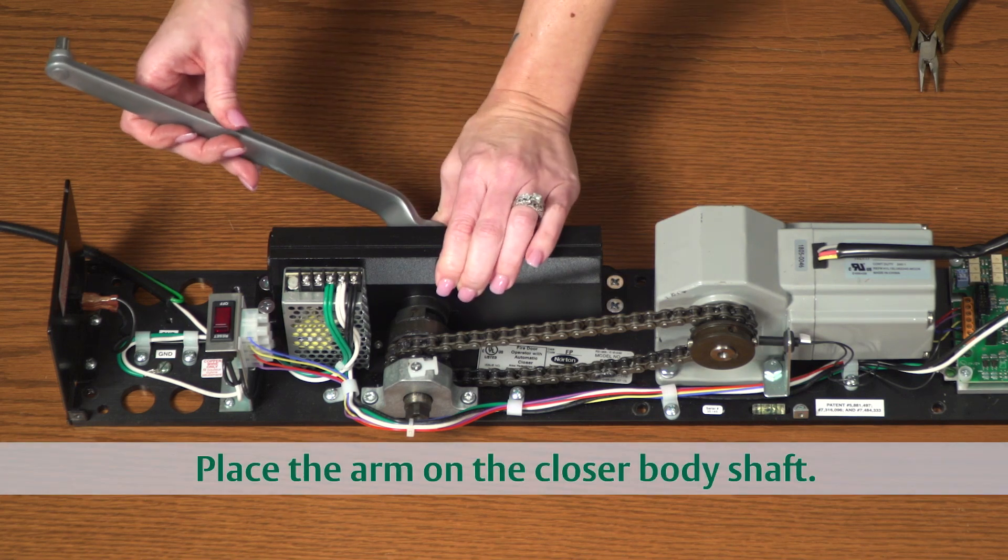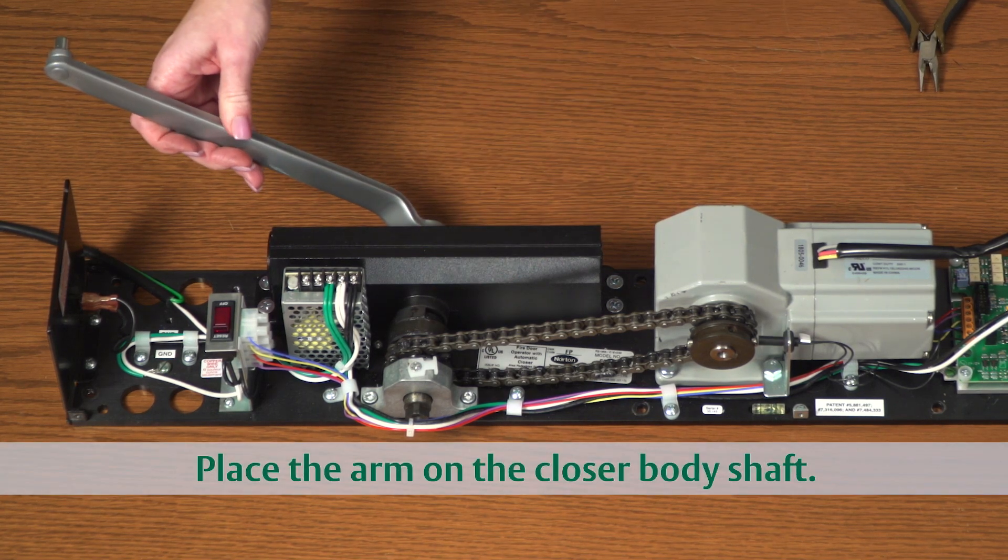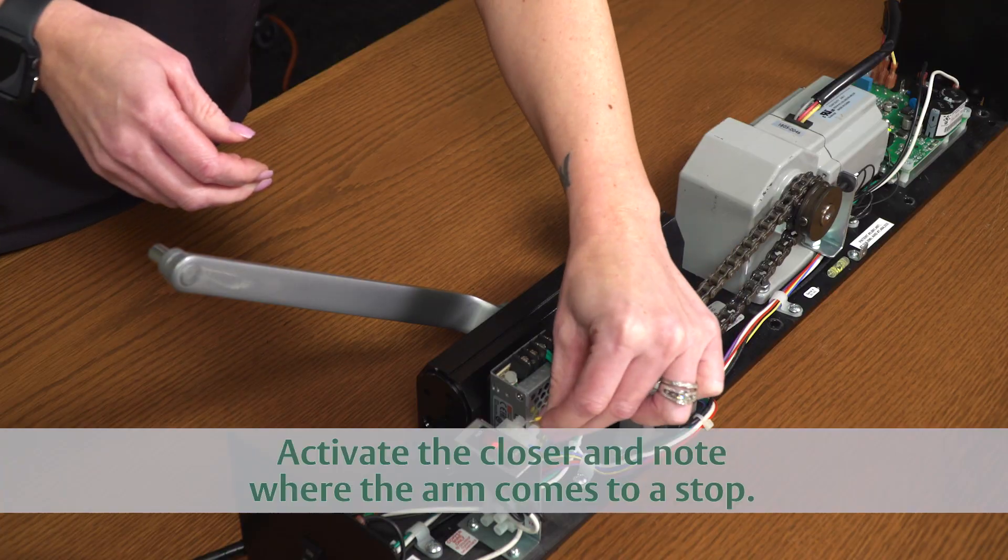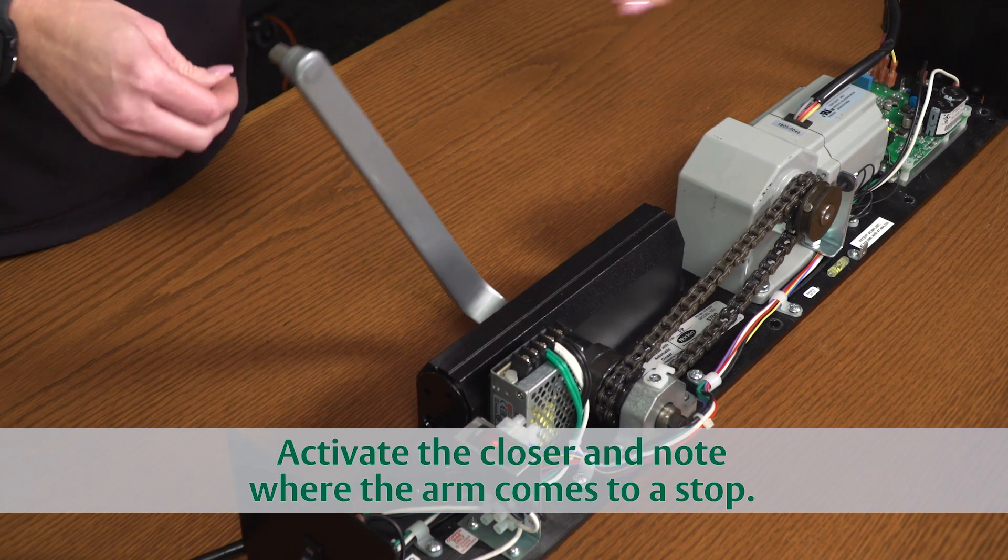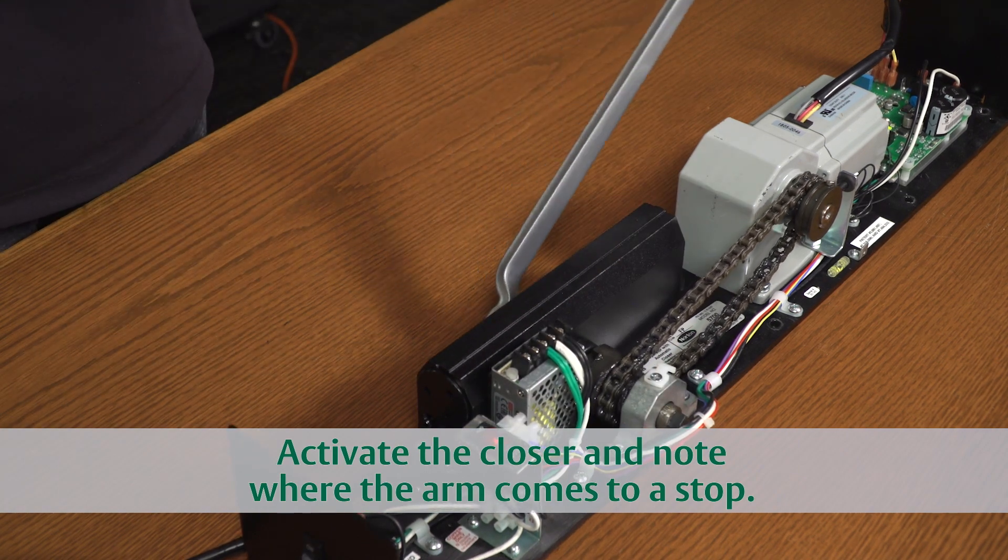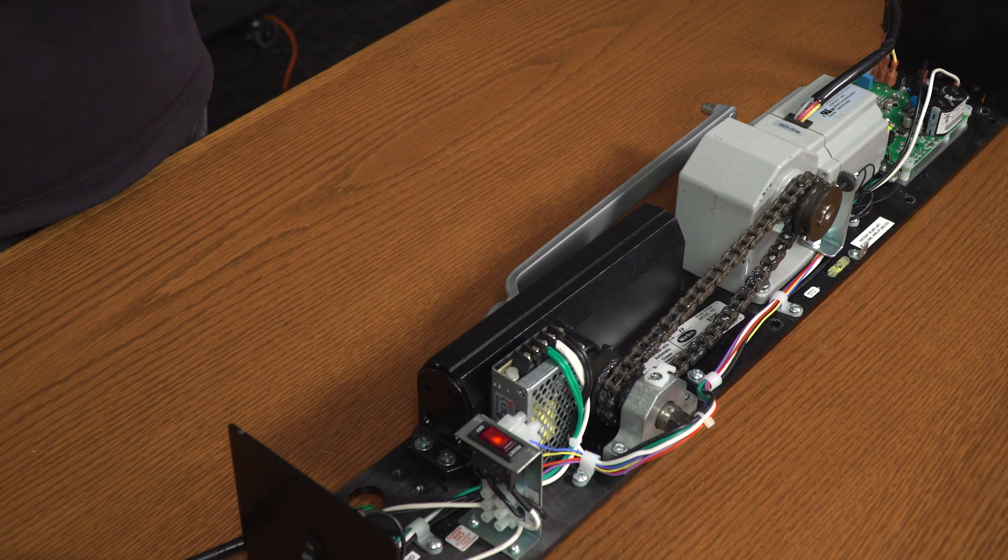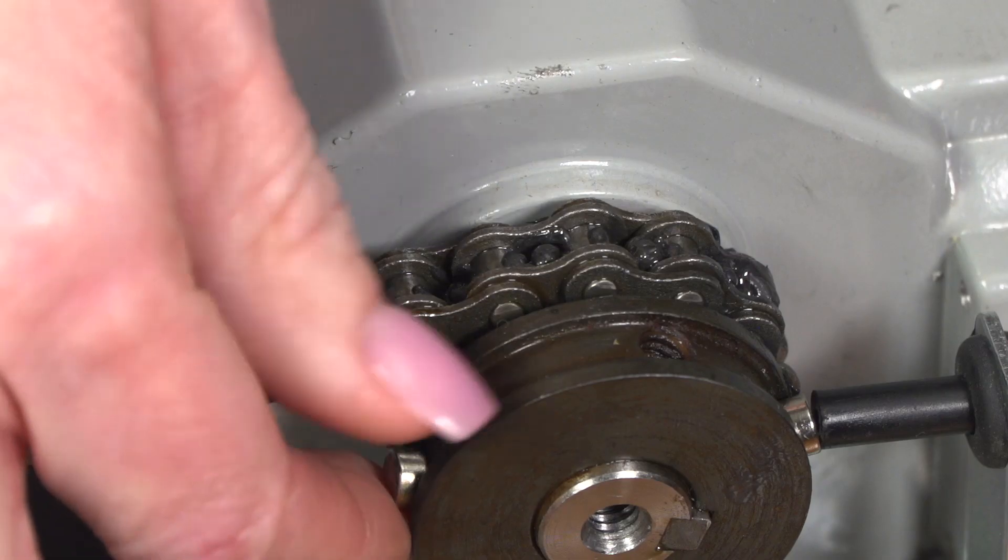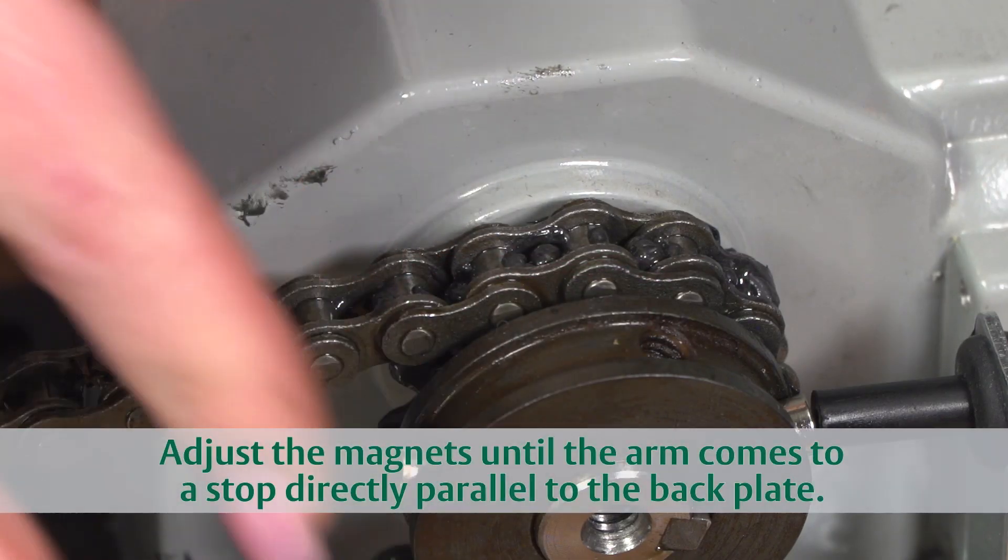To test the open and close parameters, place the arm on the closer body. Switch on the power and once again activate the operator. The arm should move to a position parallel to the operator. Adjust the magnets as needed to achieve the desired position.